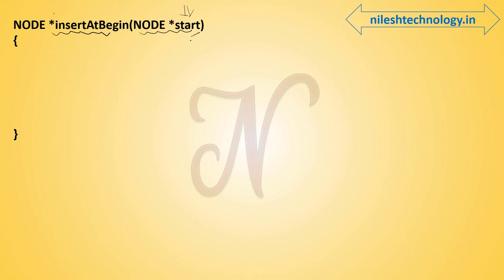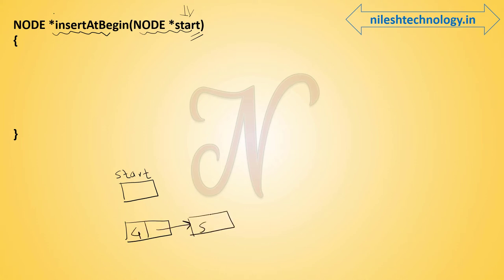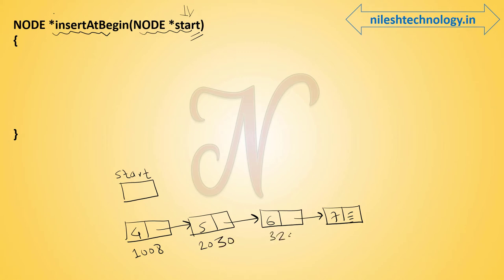First we draw one linked list. This is your start pointer, pointing to the first node. The linked list contains nodes with values 4, 5, 6, and 7. We assume some addresses: 1008, 2030, 3292, and 4932. Start is pointing to the first node at address 1008. Each node stores the address of the next node, and the last node has a null address.